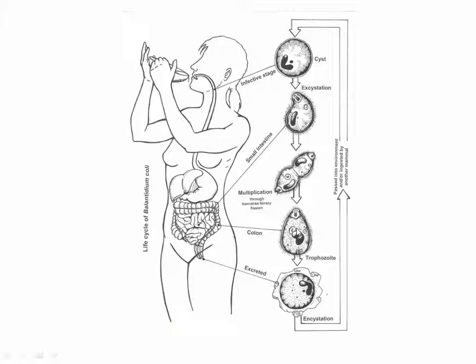The parasite first undergoes encystation from the trophozoite to the cystic stage, then is excreted through fecal material. Infection may be asymptomatic with no signs or symptoms, or it may be symptomatic. In acute infection it causes colitis, abdominal pain, dysentery, abscess, or ulcer in the large intestine. In the chronic stage, a person may be asymptomatic for a long time and then suddenly become symptomatic again, with tenderness of the colon.